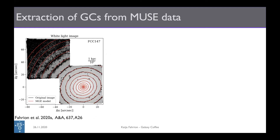Talking now about globular clusters — how do we get them from the MUSE data? Looking at this early-type galaxy in the Fornax cluster, we see the MUSE footprint of roughly six kiloparsecs per pointing squared. In the white-light image you can't see any globular clusters, because they are hidden among the bright light of the galaxy.